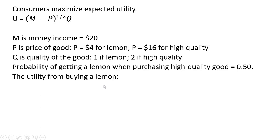The utility from buying a lemon. So if you buy a lemon, we're going to plug in $20 for M. We're going to plug in the lemon's price of $4. So 20 minus 4 is 16, and the square root of that is 4. So 4 times 1, where 1 is the quality of a lemon, gives a utility of 4.